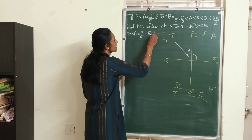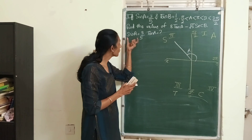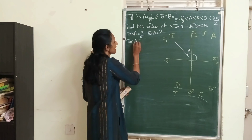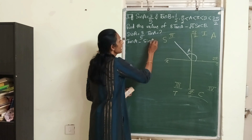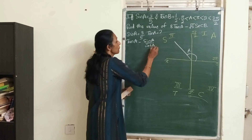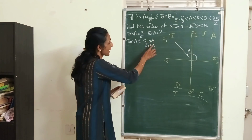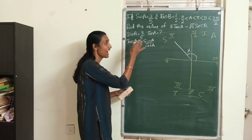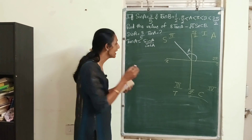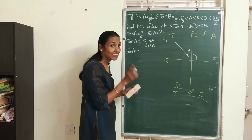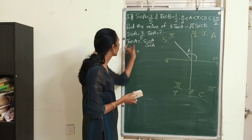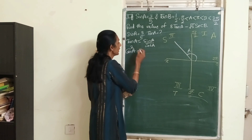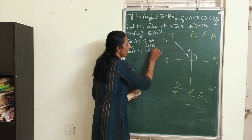It's given to us that sin A is 3/5, but we have to find the value of tan A. So what formula connects sin A with tan A? Yes — tan A is sin A divided by cos A. But the problem is we know sin A but we don't know cos A, so first I need to find out what cos A is.